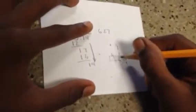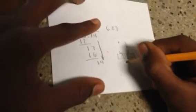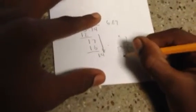4 is by itself. 1 plus 6 is 7. 1 plus 6 is 7. 1 plus 2 is 3. And 1 is by itself.